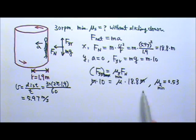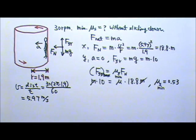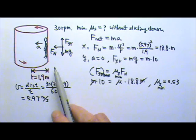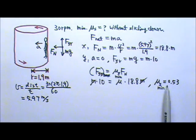So the mu_S between the riders' clothing and the wall has to be at least 0.53. Since the amusement park cannot control what clothing the riders wear, so the inside wall of a rotor has to be some sort of rubbery material to ensure large enough mu_S.